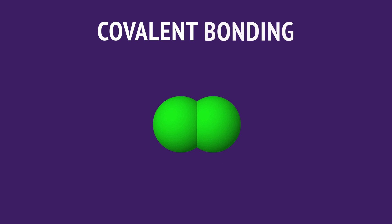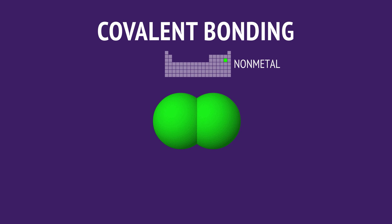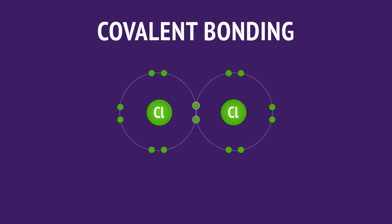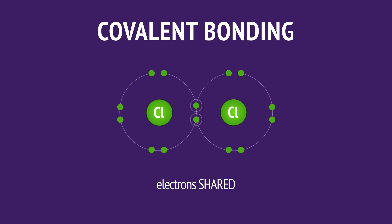A covalent bond occurs when a nonmetal bonds with another nonmetal, as in this chlorine molecule. Covalent bonding involves the sharing of valence electrons between atoms.